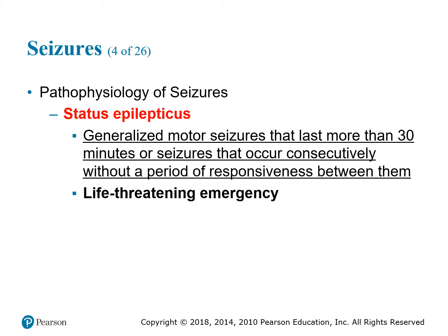Status epilepticus is a seizure lasting longer than 30 minutes, where there is high risk for brain cell damage. It also includes repeated seizure activity with no recovery in between — the patient convulses, stops, never regains consciousness, then goes right back into another seizure. Even though the seizure may have stopped, there was never a recovery between episodes.